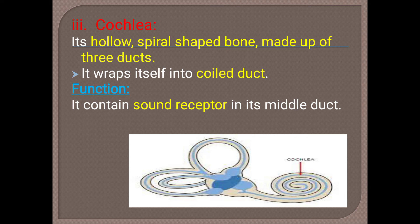The third and last part of the inner ear is the cochlea. It is a hollow, spiral-shaped bone made up of three ducts that wrap into a coil. The function of the cochlea is that it contains sound receptors in its middle duct.